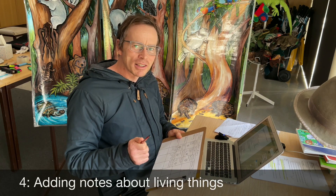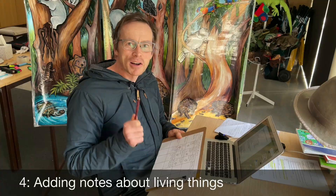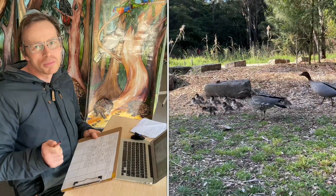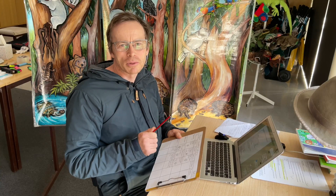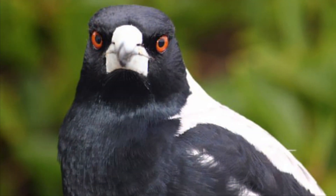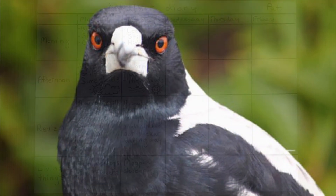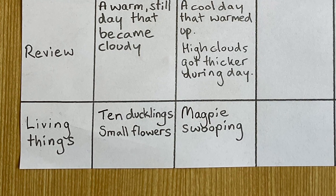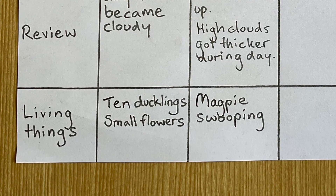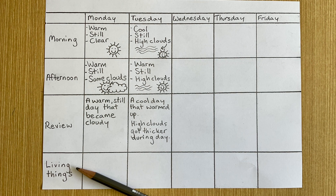Yesterday, after I finished filming, I saw some cute baby ducklings and I also saw some cool curly flowers. And this morning, a magpie swooped me. So I recorded all these things in the new living things row. Now it's your turn — make a row for living things observations and record what you see each day. Keep going with your diary.